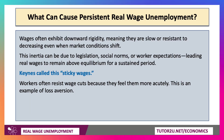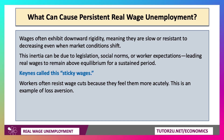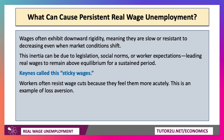So what can cause persistent real wage unemployment? Often it's the case that wages exhibit downward rigidity — they're slow and resistant to decreasing even when the market changes. That can be due to wage laws, minimum wage laws, social norms, people's perception of what a wage should be, and also worker expectations. Keynes had a phrase for this — he talks about sticky wages. People often resist a wage cut because they feel it more acutely, and if you've studied behavioural economics, you'll know this is an example of loss aversion.